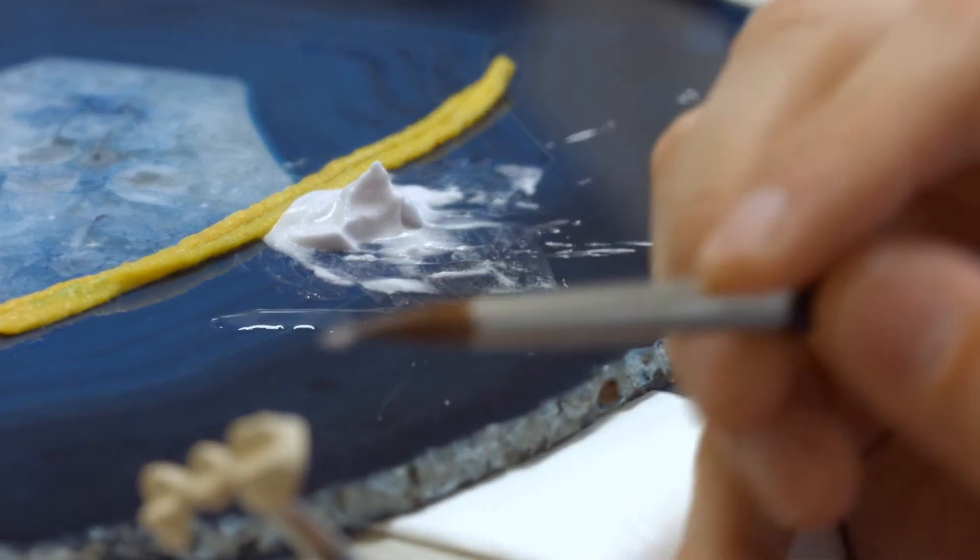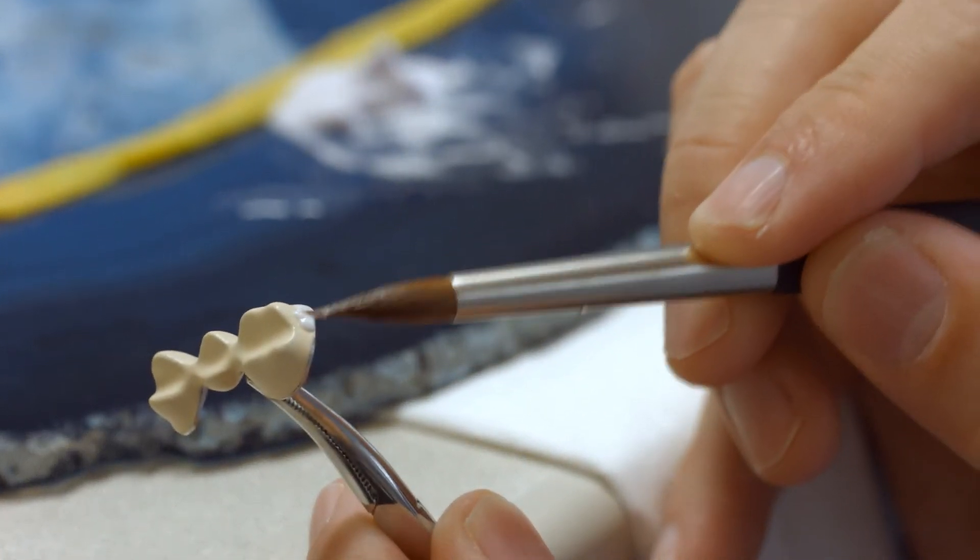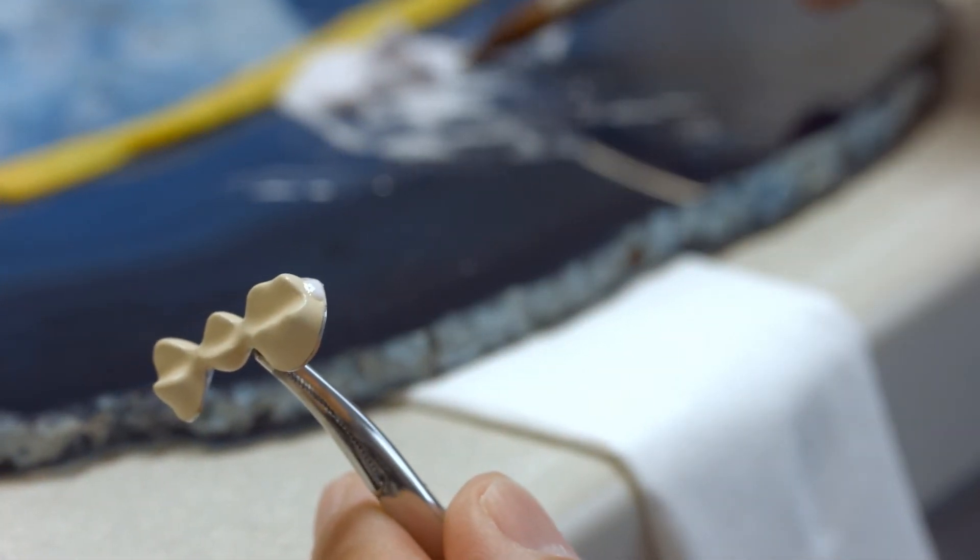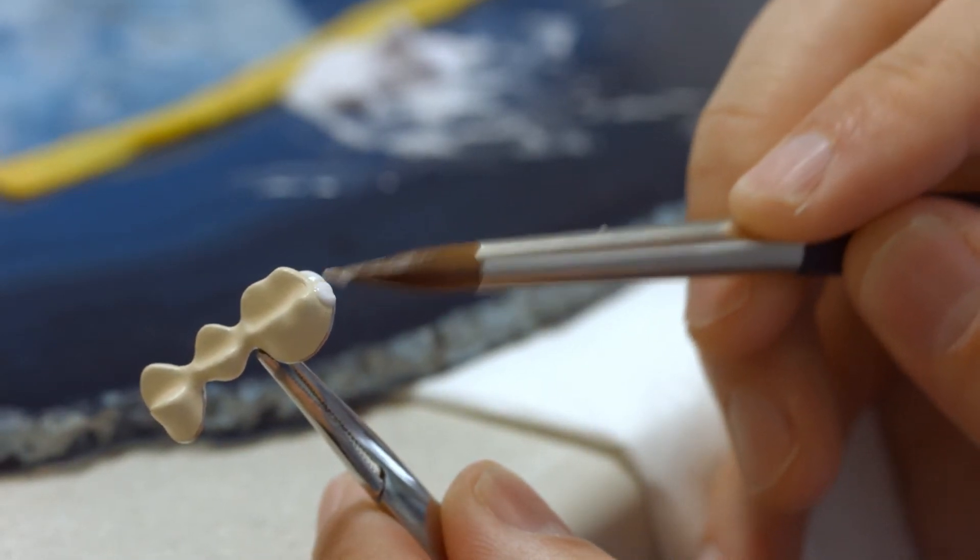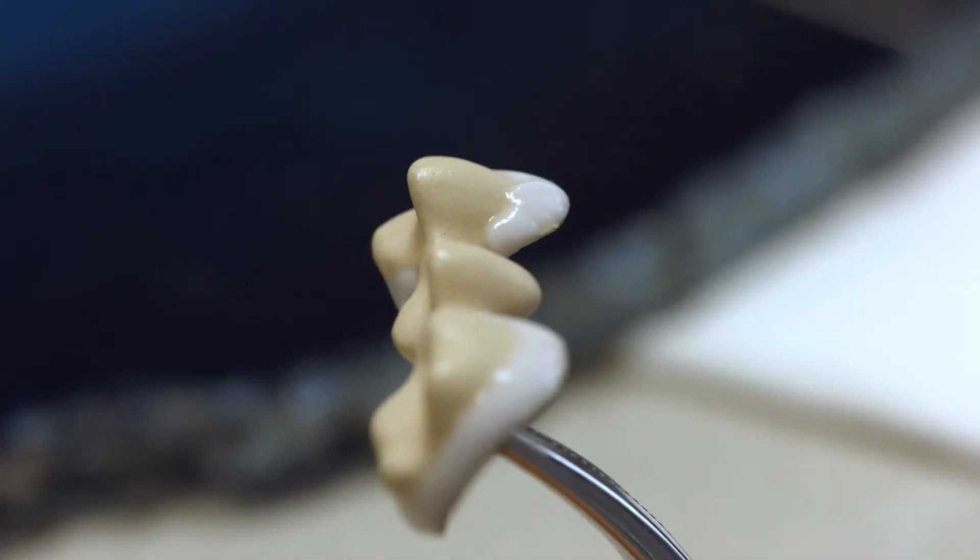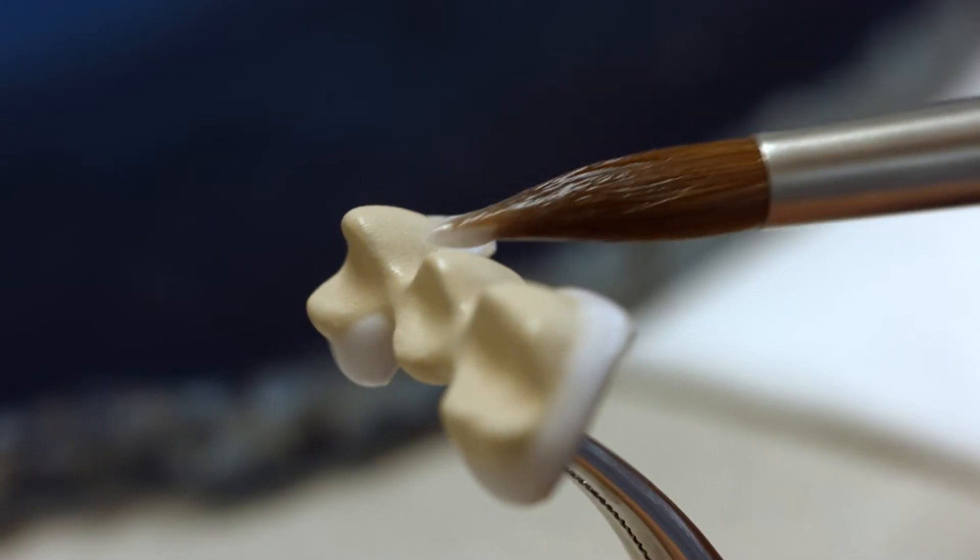Now, apply a little of the layering ceramic to the cervical, interdental, palatal and occlusal areas and lightly agitate it. This improves the wetting conditions between the layering ceramic and the opaquer.